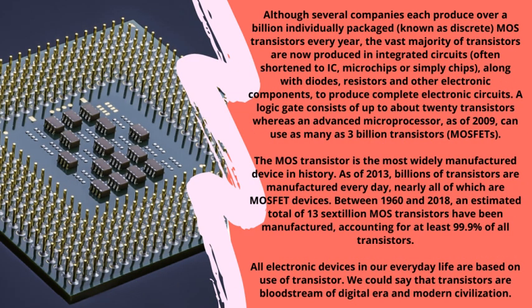Although several companies each produce over a billion individually packaged discrete MOS transistors every year, the vast majority of transistors are now produced in integrated circuits — ICs, microchips, or chips — along with diodes, resistors, and other components to produce complete electronic circuits. An advanced microprocessor as of 2009 can use as many as three billion transistors. As of 2013, billions of transistors are manufactured every day, nearly all of which are MOSFET devices. Between 1960 and 2018, an estimated 13 sextillion MOS transistors have been manufactured, accounting for at least 99.9 percent of all transistors. All electronic devices in our everyday lives are based on transistors — we could say that transistors are the bloodstream of the digital era and modern civilization.